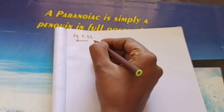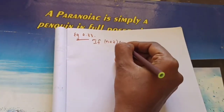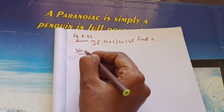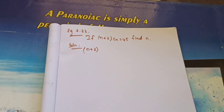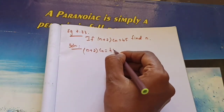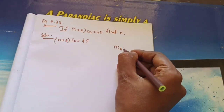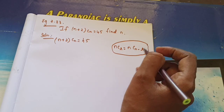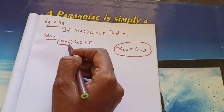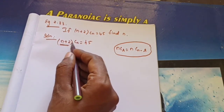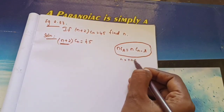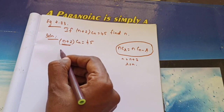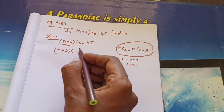Example 2.33: If (n+2)Cn = 45, find n. We use the formula nCr = nC(n−r). Here the total is n+2 and r = n, so n+2−n = 2. Therefore (n+2)Cn = (n+2)C2, which equals 45.